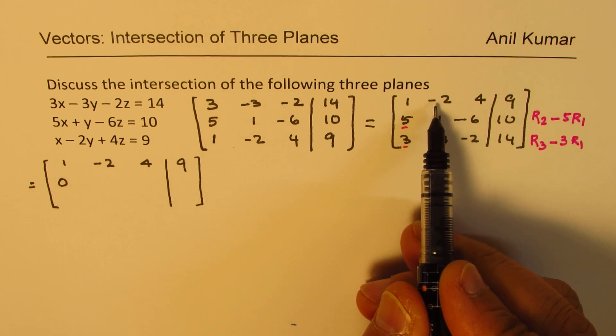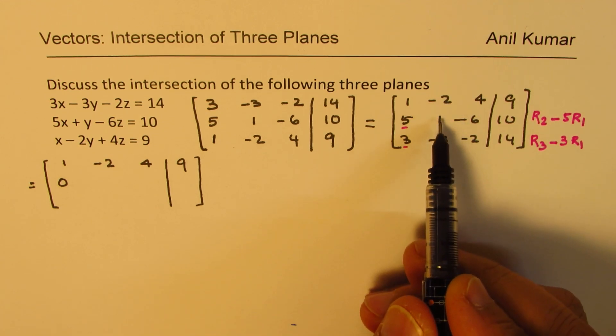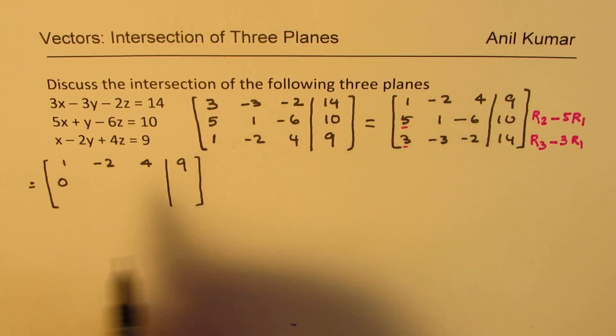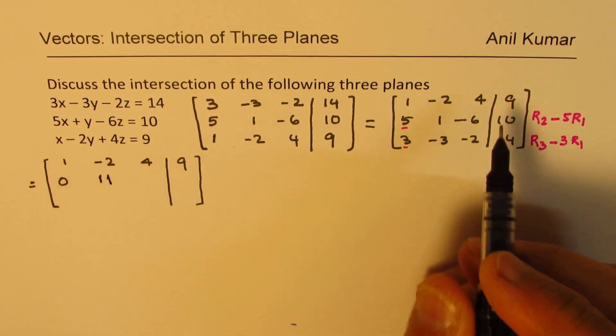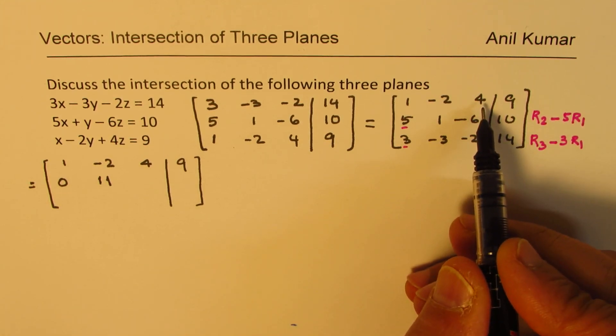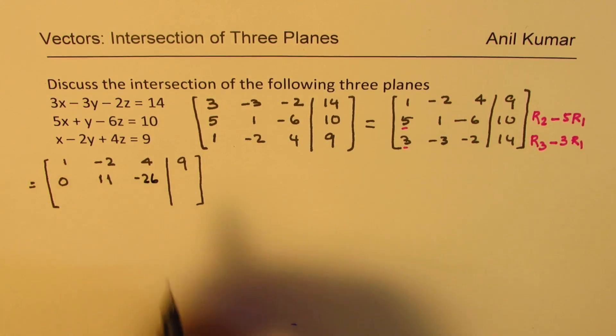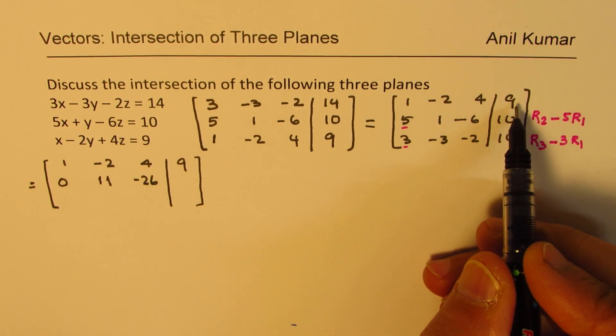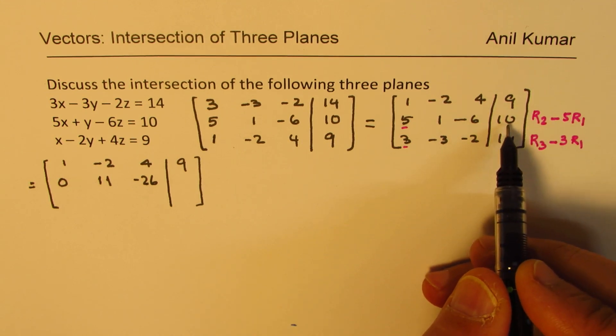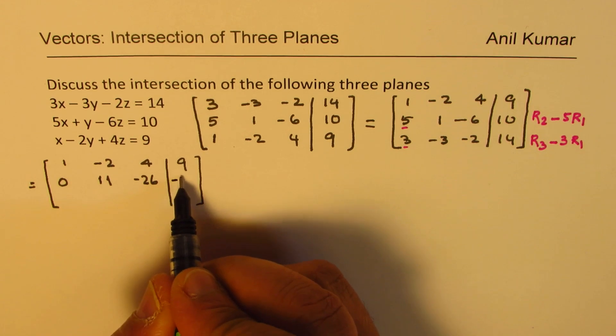5 times minus 2 is minus 10. 1 minus minus 10 will give us 11. 4 times 5 is 20, and when you take away, it becomes minus 26. 9 times 5 is 45, and when you take away minus 45 from 10, you get minus 35.